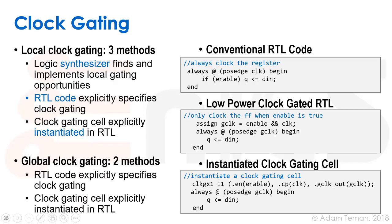We can also use some of these methods at the global level. One is using RTL code, and the other is instantiating a clock gate. We'll often use instantiation of a clock gate because that way it's easy to tell the synthesizer not to remove it and keep it there, even though some synthesis algorithm might see no reason for it.